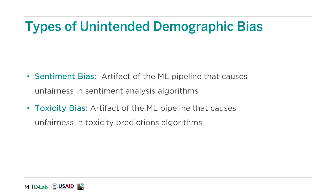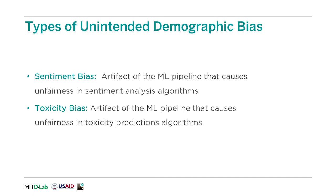Within unintended demographic bias, there are two different types of bias we focus on in NLP applications. These are bias in sentiment analysis systems — which analyze positive or negative feelings associated with words or phrases — and toxicity analysis systems designed to detect derogatory or offensive terms. In either sentiment analysis or toxicity prediction, it is important that our machine learning model does not use sensitive demographic attributes to determine whether a sentence should be classified as positive, negative, toxic, or non-toxic.